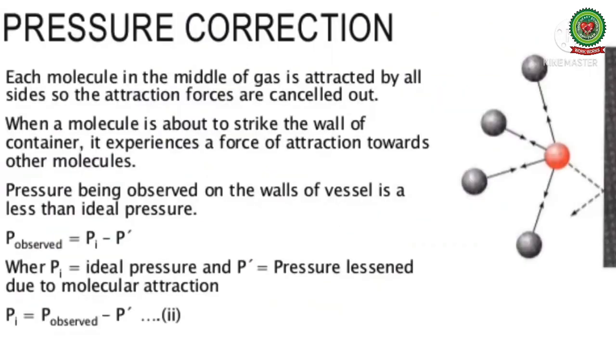Pressure correction: A molecule in the interior of the gas is attracted by other molecules on all sides, so these forces are not effective in the interior as equal and opposite forces cancel each other. However, a gas molecule which is close to the wall of the vessel and is going to strike the wall will experience an inward pull due to unbalanced attractive forces.